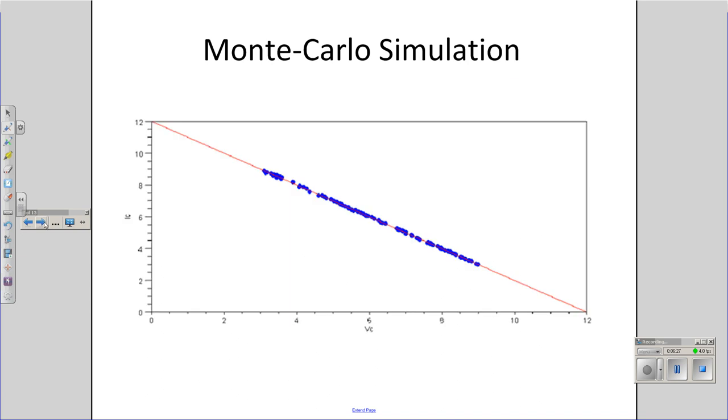What that looks like is as follows. This is VCE. Here's your IC. My nominal Q point was right in the middle. That's where it's supposed to be. In practice, because the variations in data, it could be anywhere as shown on the blue dots.